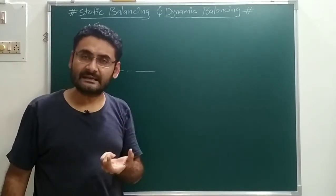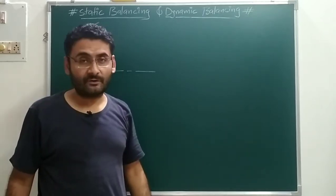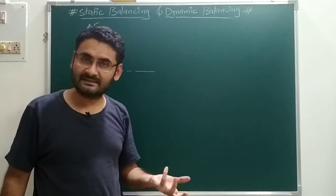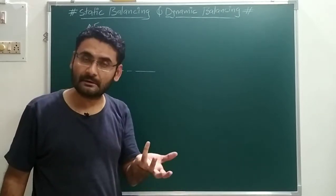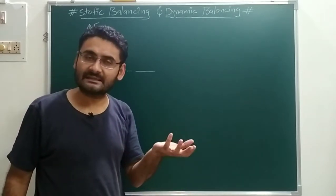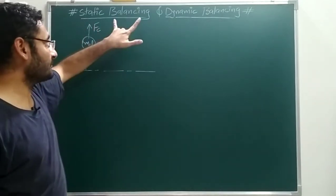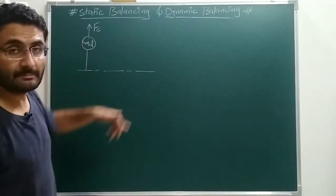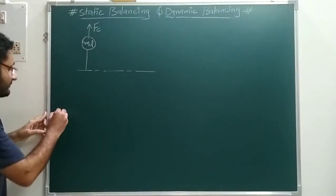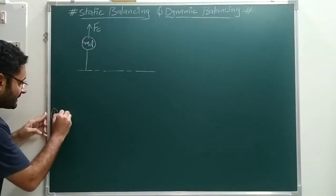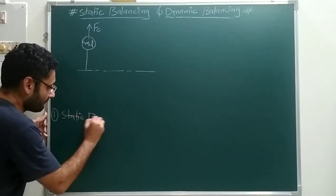To avoid the failure of your rotating system, balancing is necessary. This type of balancing is done in rotating as well as reciprocating systems — for example, in the IC engine, in centrifugal pumps, and in turbines, balancing is required. Balancing has two types: first is static balancing, and second is dynamic balancing. We will start with static balancing.